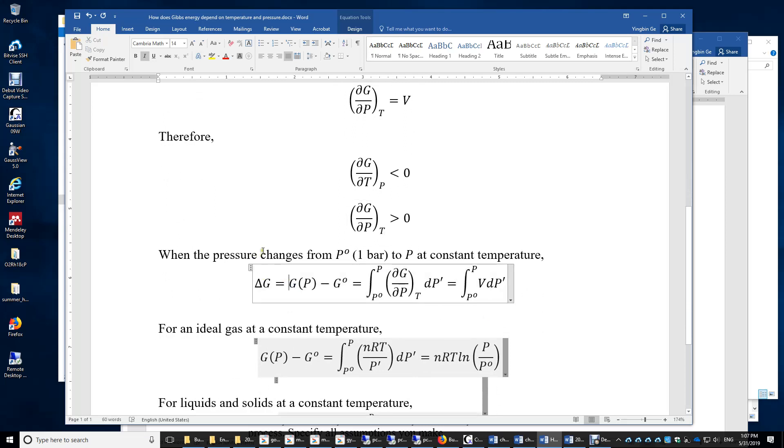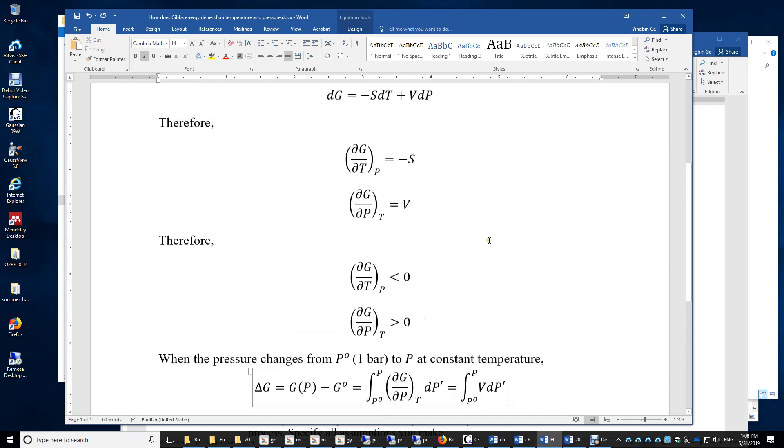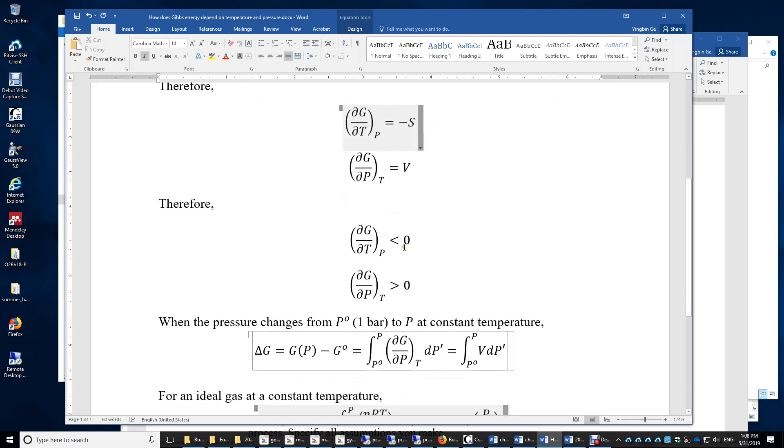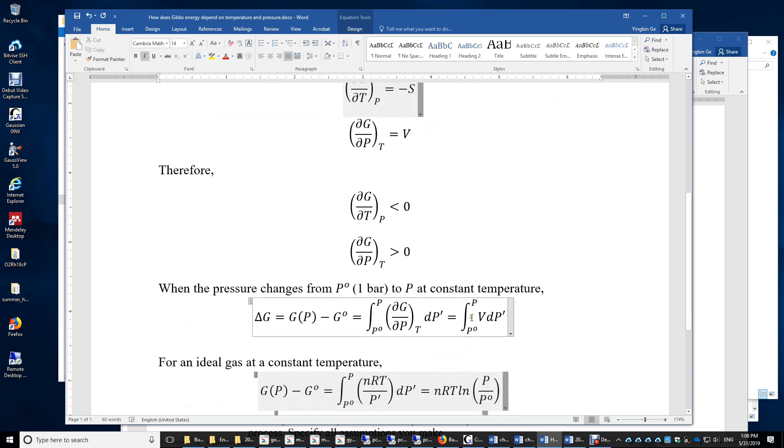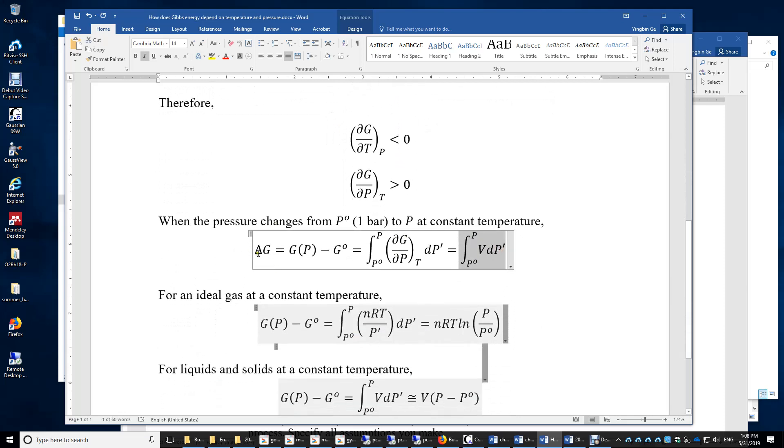So more quantitatively, how does the Gibbs energy change from the standard pressure one bar to any pressure P at constant temperature condition? Delta G is the change of G from one bar to the final pressure P. Therefore, we just need to integrate this dG. And since temperature is constant, we know dG equals VdP. So we plug in this VdP here.